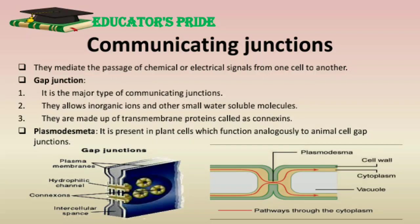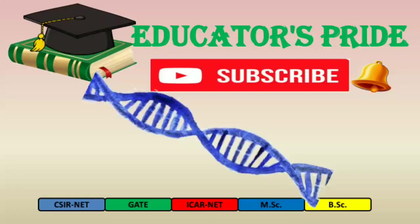In plant cells, cytoplasmic connections present for communication between neighboring cells are called plasmodesmata. Plasmodesmata are structurally different from gap junctions. This is all about cell junctions and their various types. If you like my video, please subscribe to my channel and hit the bell icon for more such videos. Thank you.